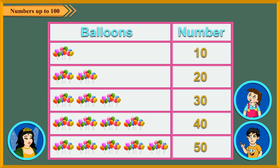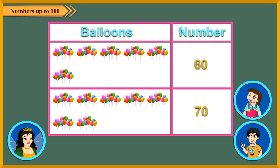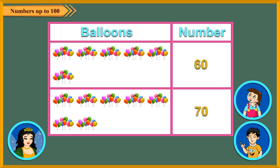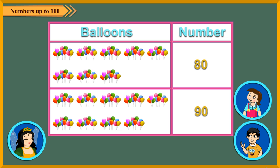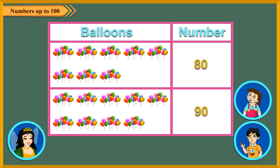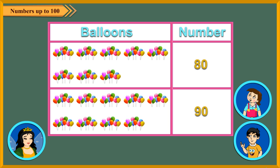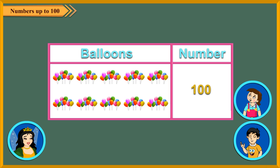Now, if there are 6 bunches of balloons, then we name that number as 60. Similarly, 7 bunches — 70, 8 bunches — 80, 9 bunches — 90, and 10 bunches — 100.